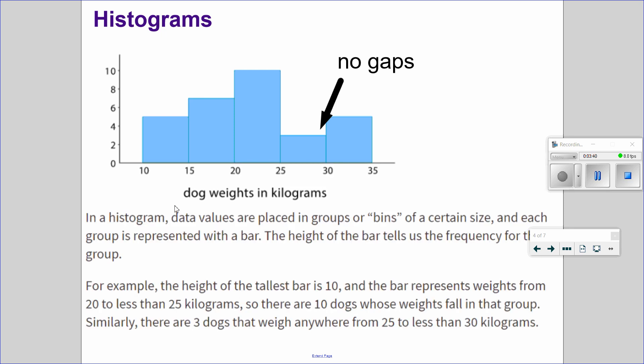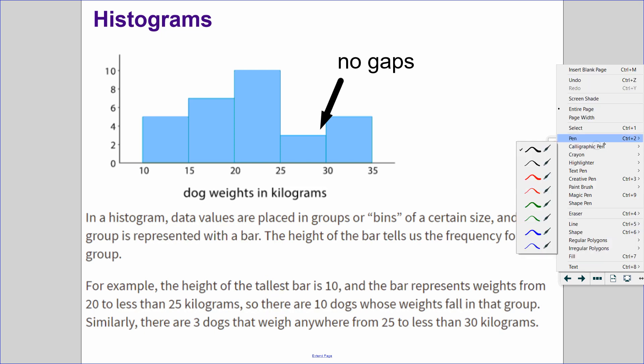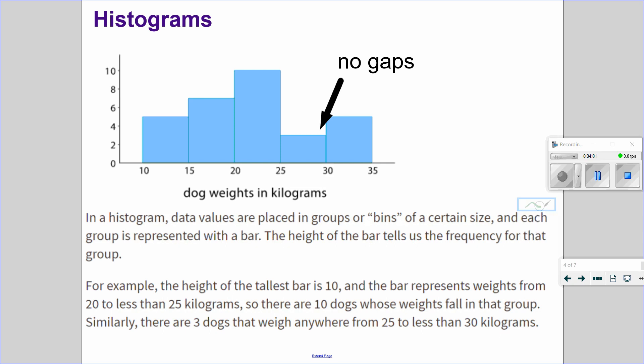So in the histogram, data values are placed in groups or bins of a certain size. And each group is represented with a bar. The height of the bar tells the frequency for that group. For example, the height of the tallest bar is 10. And the bar represents weights from 20 kilograms to less than 25 kilograms. So there are 10 dogs whose weights fall in that group.